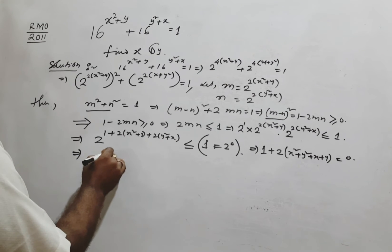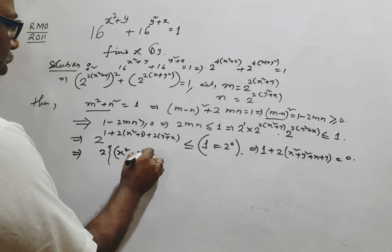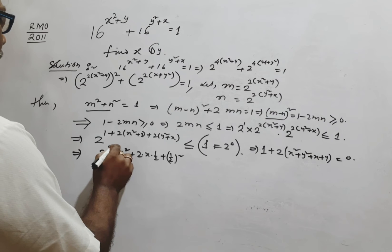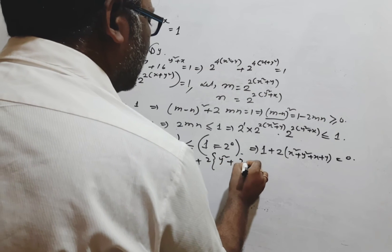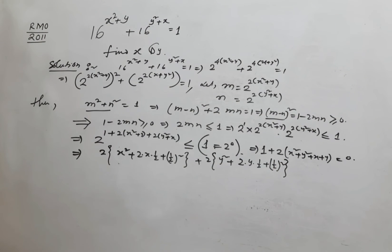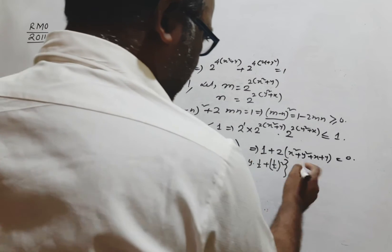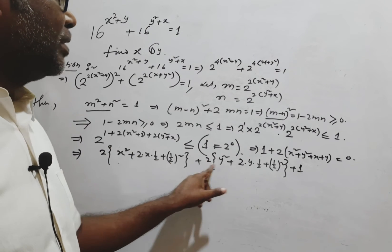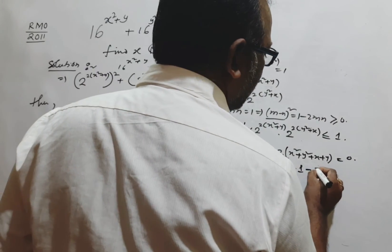We complete the square: 2(x² + 2·x·(½) + (½)²) + 2(y² + 2·y·(½) + (½)²). Accounting for the added (½)² terms: 2·(¼) + 2·(¼) = ½ + ½ = 1, so we subtract 1, giving 2(x + ½)² + 2(y + ½)² − 1 = 0, which equals 0.